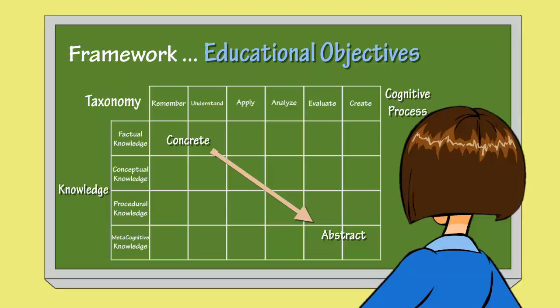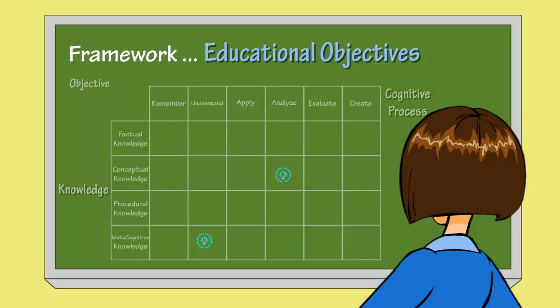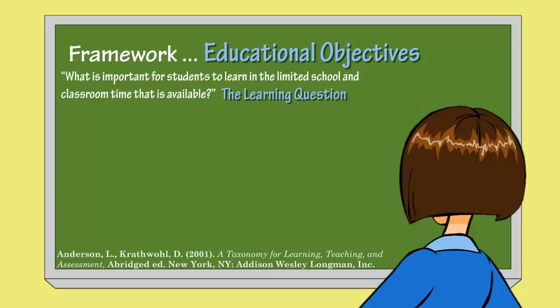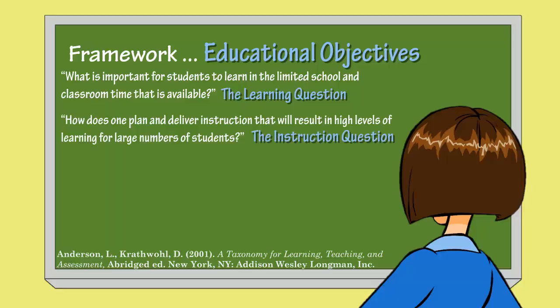So the table looks pretty straightforward, but how does it work? How can Ms. Williams use the table? Anderson and others suggest that by placing objectives into the appropriate place in the table, teachers may get some help in answering four important questions. Anderson and others posit that teachers always consider what is important for students to learn in the limited school and classroom time available — this can be thought of as the learning question. Use of the taxonomy table can help by putting objectives into a common language which can provide perspective. Secondly, they put forward the instruction question: how does one plan and deliver instruction that will result in high levels of learning for large numbers of students? Use of the table can help separate the objectives into different types of learning that may be required, and different types of learning may likely need different instructional approaches.